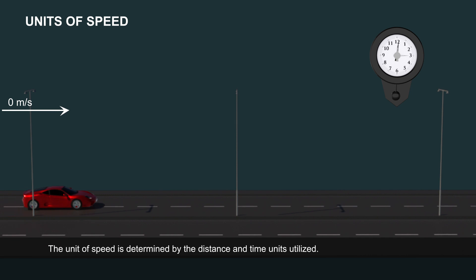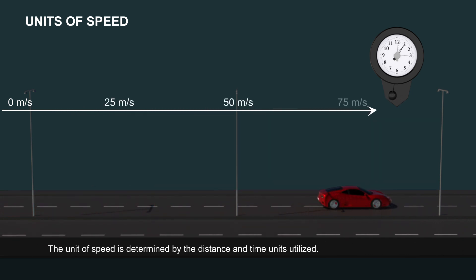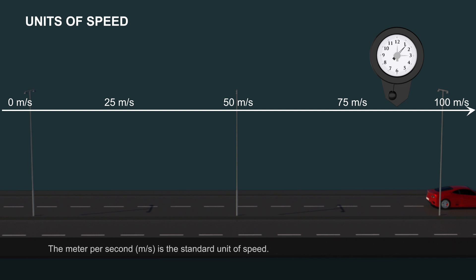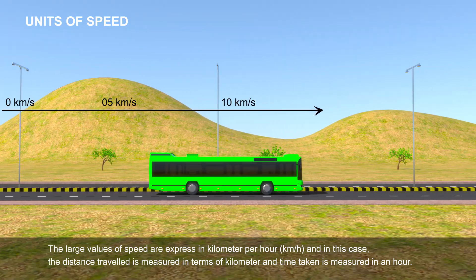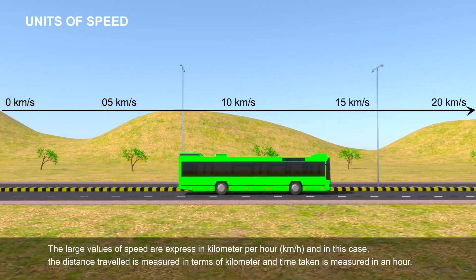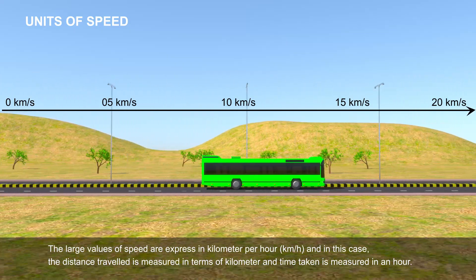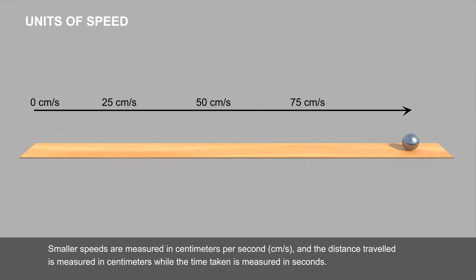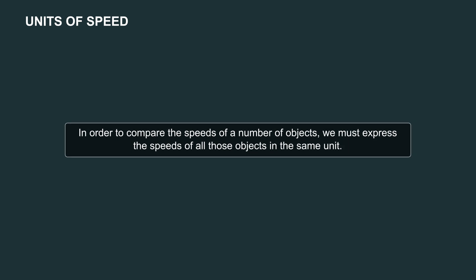Units of speed: the unit of speed is determined by the distance and time units utilised. The metre is the standard unit of measurement for distance, and the second is the standard unit of measurement for time. Therefore, the metre per second is the standard unit of speed. Large values of speed are expressed in kilometres per hour, where distance is measured in kilometres and time is measured in hours. Smaller speeds are measured in centimetres per second. In order to compare the speeds of a number of objects, we must express the speeds of all those objects in the same unit.